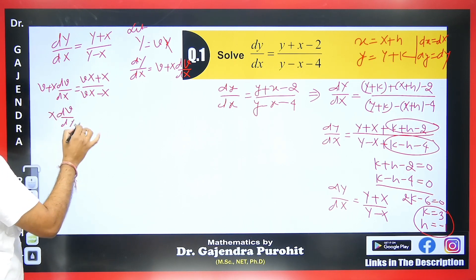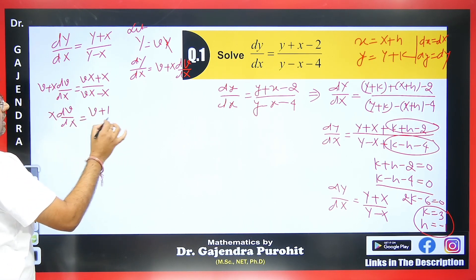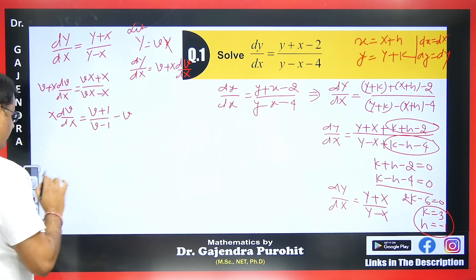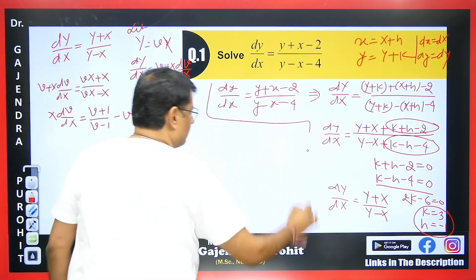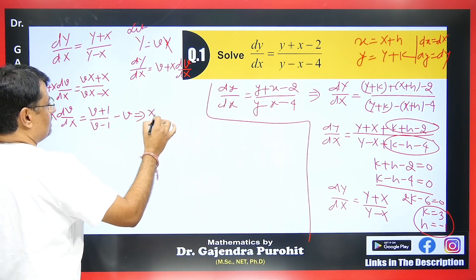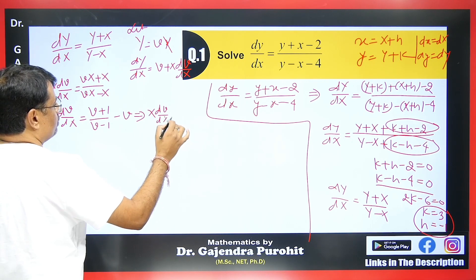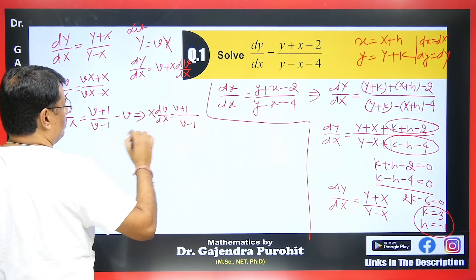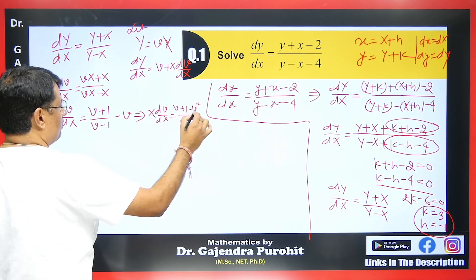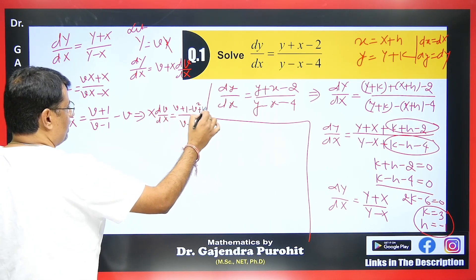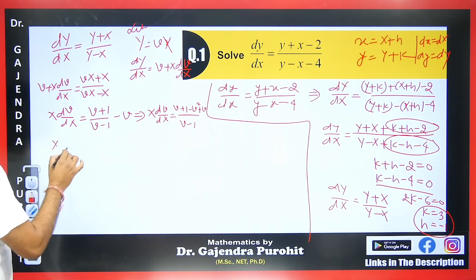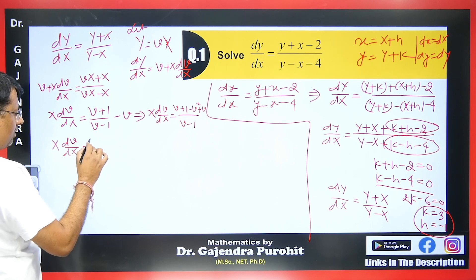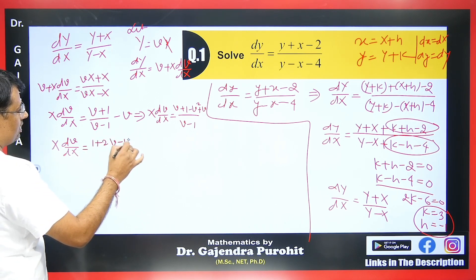After substituting Y = vX, we get v + X·dv/dX = (vX + X) / (vX - X). The X cancels from both sides, giving X·dv/dX = (v + 1)/(v - 1) - v. Taking the LCM as (v - 1), the numerator becomes v + 1 - v(v - 1) = v + 1 - v² + v = 1 + 2v - v². So X·dv/dX = (1 + 2v - v²) / (v - 1).